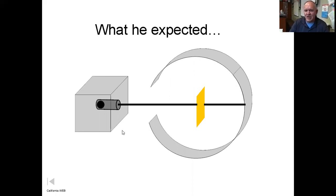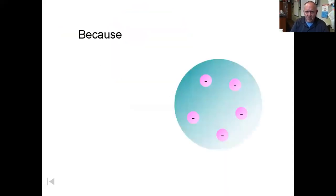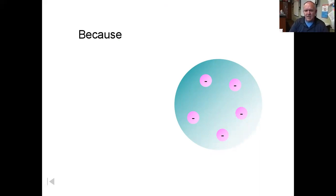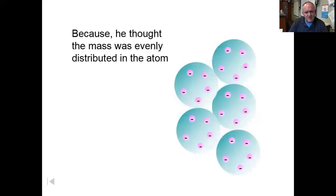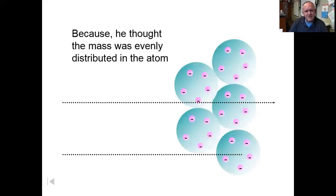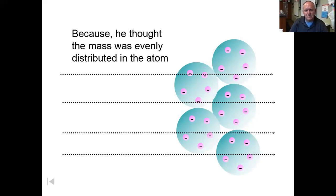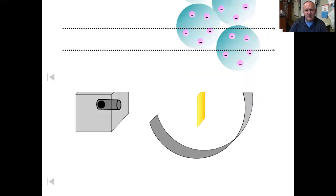They expected a flash to happen only right at the edge where the particles exited straight through. The positive part of the atom is all spread out and not very dense, so you should be able to punch right through it. That was the expectation — just go straight on through.